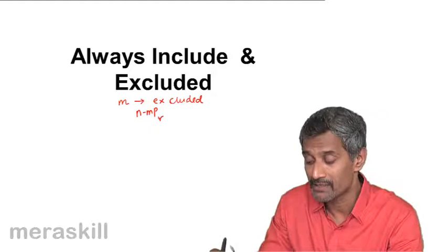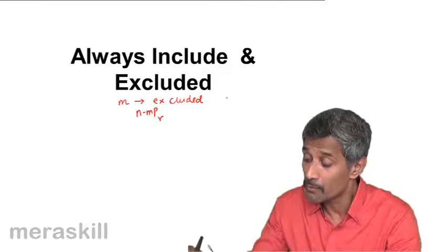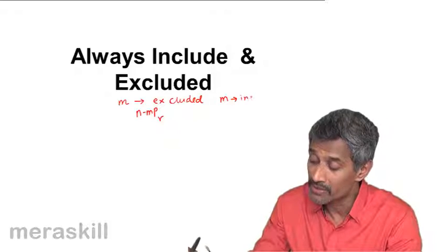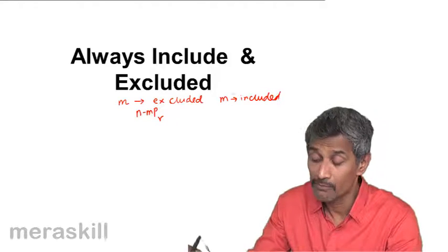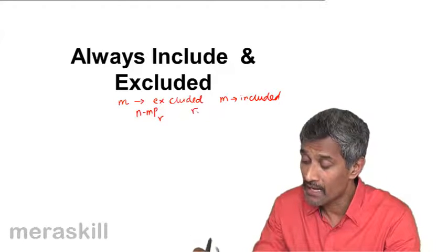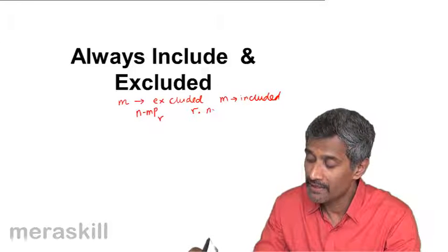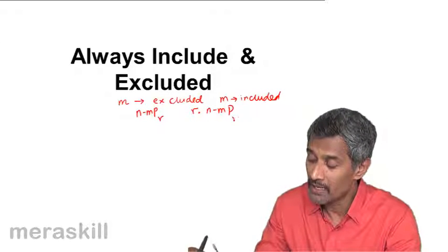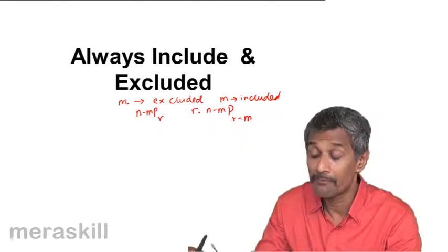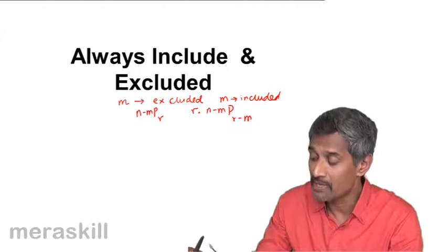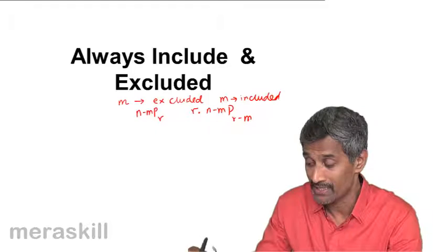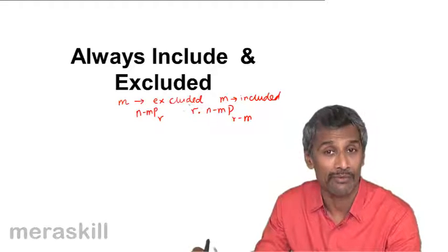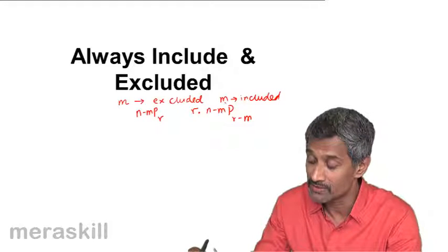Suppose M has to be always included, then the number of ways is R times N minus M P_(R minus M). Because M of them have been chosen, the remaining R minus M will be chosen in N minus M ways and arranged in R ways. So the total number of arrangements is this.